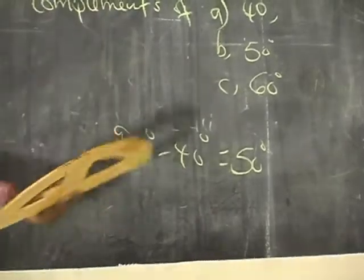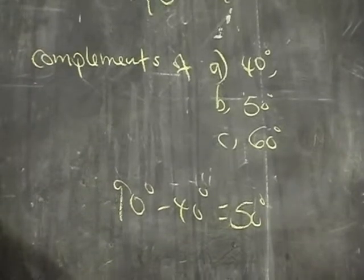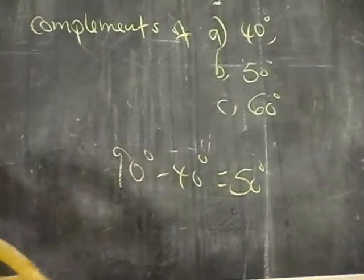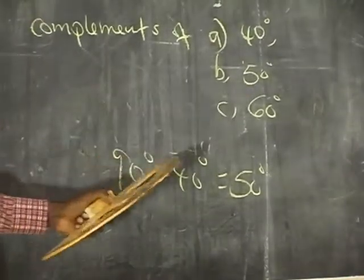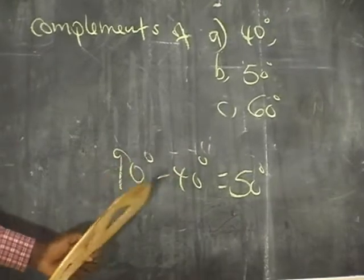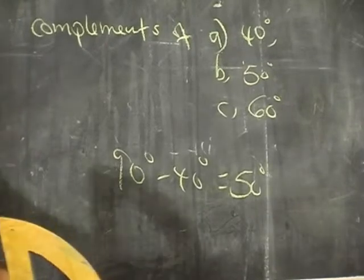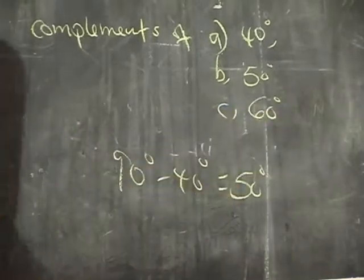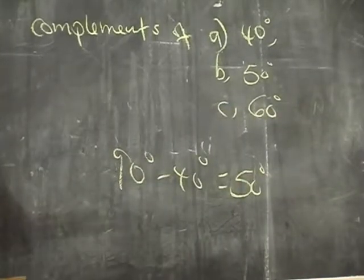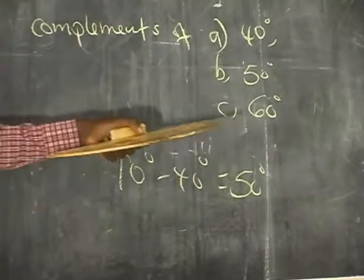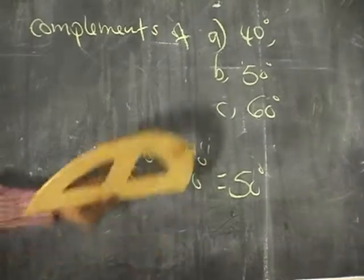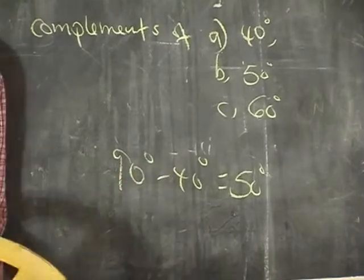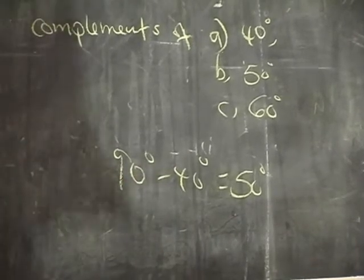What is the complement of 50 degrees? Great — the complement of 50 degrees is 40 degrees. It is just 90 degrees take away 50 degrees and you get 40 degrees as the complement of 50 degrees. What is the complement of 60 degrees? Good — the complement of 60 degrees is 30 degrees. Take 90, subtract 60 degrees, and you get 30 degrees as the complement of 60 degrees.